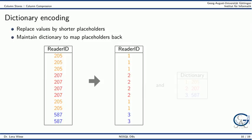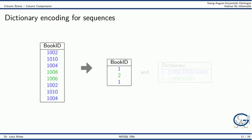The next option is dictionary encoding, which replaces values by shorter placeholders. We maintain a dictionary to map the placeholders back to the original values. In the example, column values are replaced by shorter integers, and the dictionary stores the mapping back to the original values. As an advanced option, dictionary encoding can be used for sequences of values — repeated sequences of book IDs are replaced by short integers, and the dictionary maps placeholders back to the original sequences.